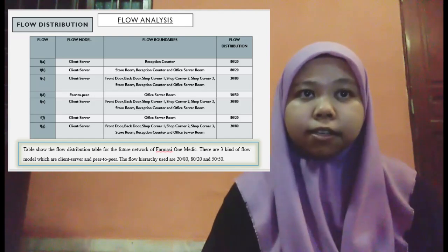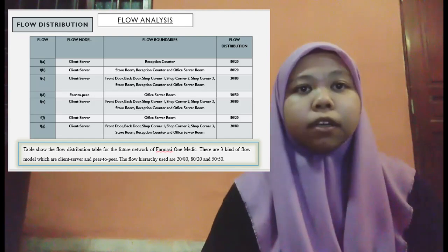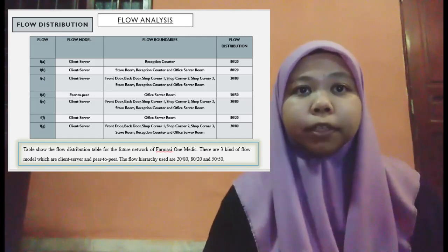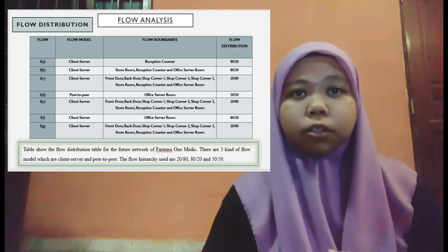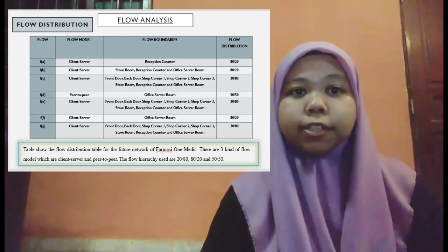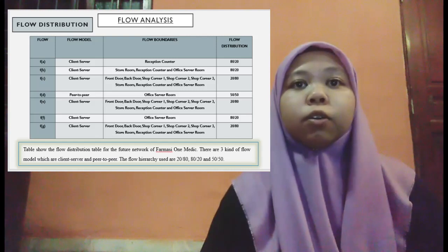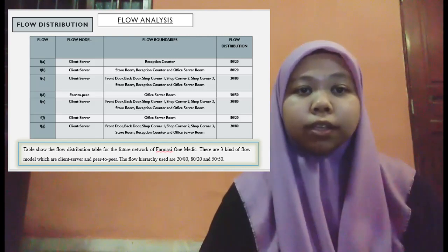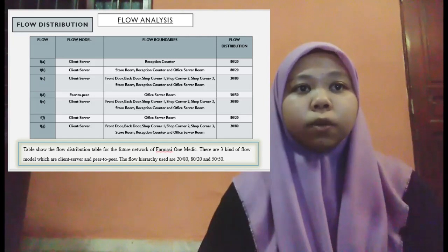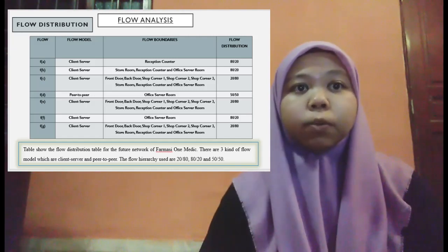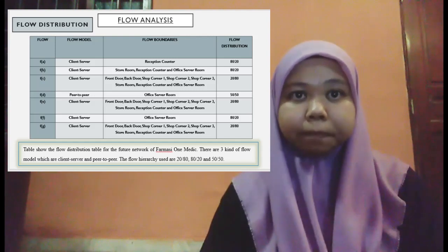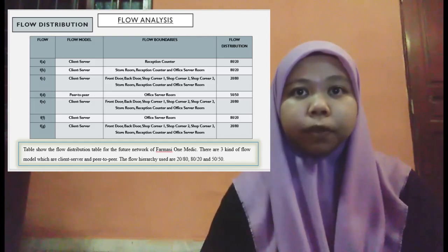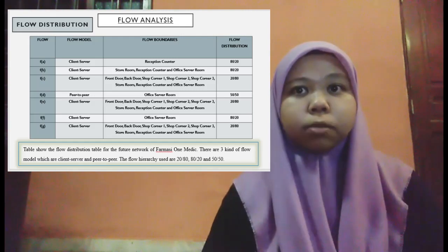For flow C, the model is client-server. The flow boundary includes front door, back door, shop corners 1, 2, and 3, storeroom, reception counter, and office server room, with a flow distribution of 20/80. Flow D is peer-to-peer, with a flow boundary at the office server room and a 50/50 flow distribution.